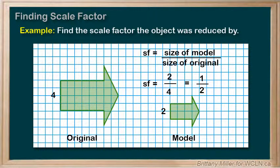So we have a scale factor of one half. We could use any side of the object to do this calculation. For example, we could look at this side instead. It's two units long in the original and one unit long in the model. By plugging those numbers into our formula, we get one half again.